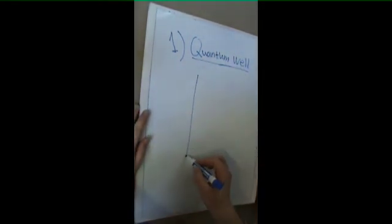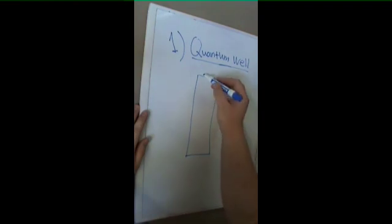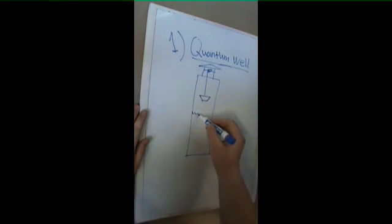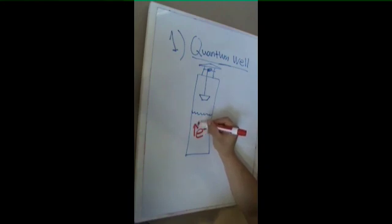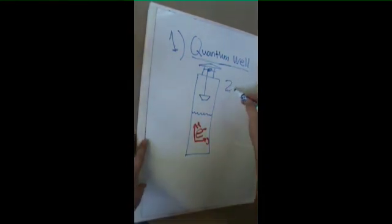The first is the quantum well, where the electron is able to move in the x and y direction, but is constrained in the z direction. In a quantum well, there are two degrees of freedom for the electron.